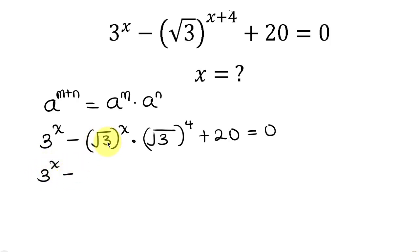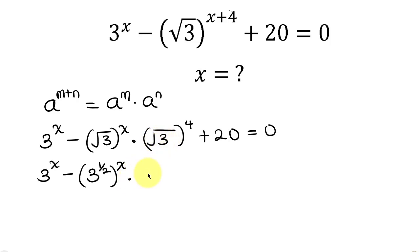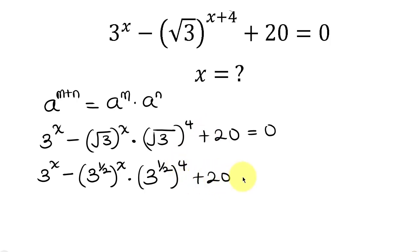The square root of 3 is the same as 3 to the power of one half, and this is raised to the x. So I'm going to write this as 3 to the power of one half raised to the x, times 3 to the power of one half raised to the 4, plus 20, equal to 0.